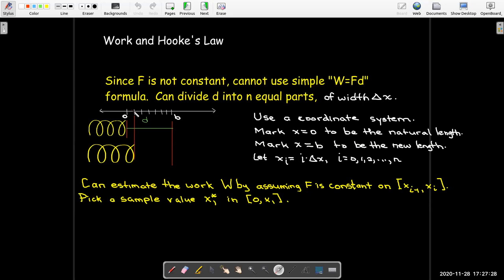Maybe I'll pick the point in the middle. The midpoint would probably be a good choice. But it doesn't really matter. I'm just going to pick some value, my sample value. And I'm going to assume that the force at that point, which would be k times x sub 1 star, is the force on the entire distance from 0 to x sub 1. So over that tiny distance, I'm assuming the force is constant, and its constant value is k times x sub 1 star.